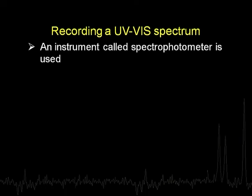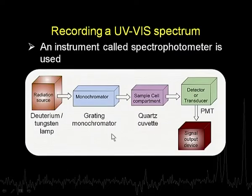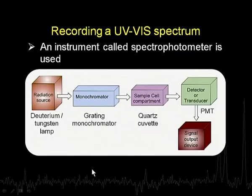Now let us take up how do we record a spectrum. By now we know that the spectrum comes as a consequence of the interaction of radiation in the UV visible range with the material. To record such a spectrum we need an instrument called a spectrophotometer. The spectrophotometer - shown here as a schematic representation - has certain essential components.